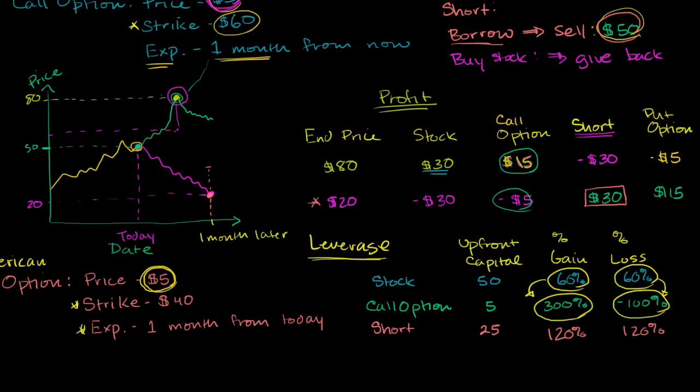So in the best possible scenario, you have to put $25 up front. You can keep the $50 that you got from borrowing and selling the stock, so you can make a 200% return. In the worst case scenario, the best scenario is 200%. In the worst case, this would be infinite. So you have to be very careful while you're shorting.